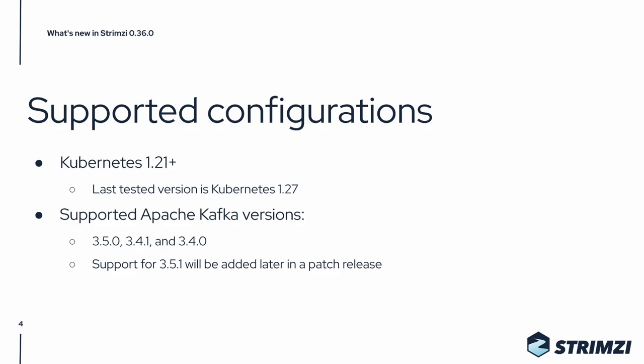In Strimzi 0.36 we support three different Kafka versions: 3.5.0, 3.4.1, and 3.4.0. We expect that support for Kafka 3.5.1 will be added later in a patch release. Kafka 3.5 uses a new version of ZooKeeper which seems to be very sensitive to the quality of your Kubernetes DNS, so if you experience any problems please let us know.